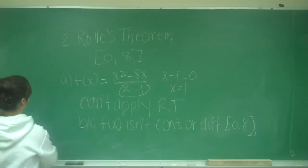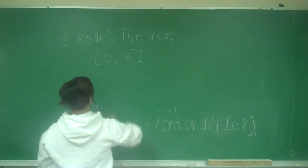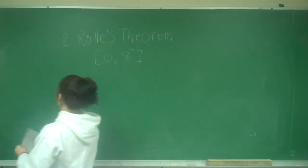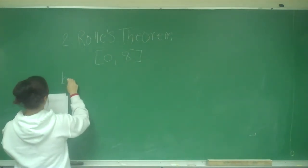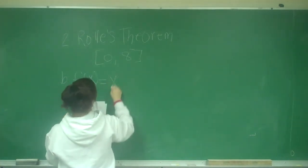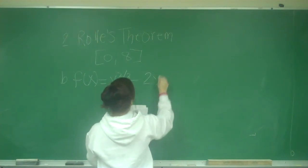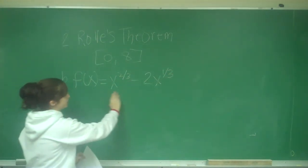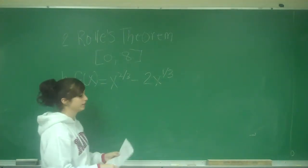Now I'm going to do part B. So B says that f(x) equals x to the 2 thirds minus 2x to the 1 third. So there's no issues with this. This is a continuous function. It's a differentiable function on that interval, so we're fine.